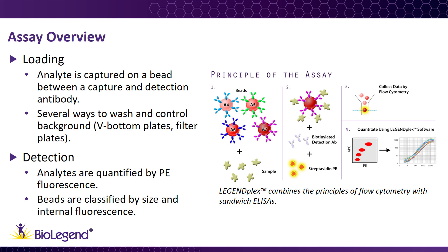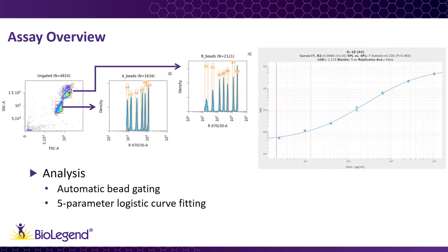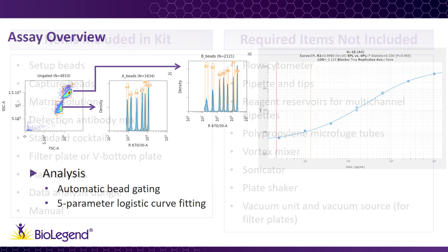Users have the option of collecting directly from the 96-well plate or from FACS tubes. Data analysis is performed using our free, cloud-based software. As seen in the figures on the left, the software automatically finds and gates the beads based on forward and side-scatter profile, followed by internal APC fluorescence. As seen on the right, it uses a five-parameter curve-fitting algorithm to generate a standard curve for each analyte from the provided titrations. Samples are then quantified based on these curves.